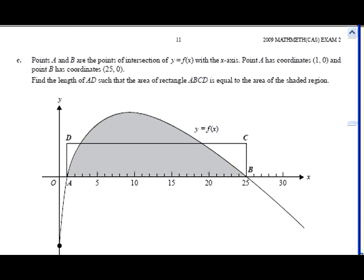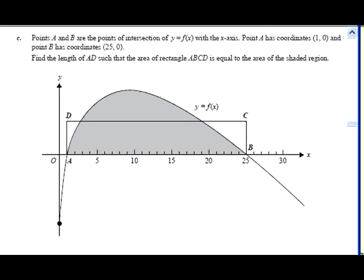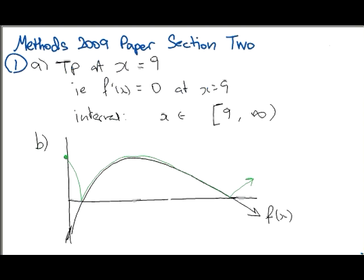On to part c. Part c says, points A and B are the points of intersection of y = f(x) with the x-axis. They'd be very nice to provide point A and point B. You don't even need to find it. Now you want to find the length AD such that the area of ABCD is equal to the area of the shaded region. Another way of asking the question is, what is the average value of f(x) over 1 to 25? Or you could just say, let's just do it geometrically. Find the area, and then equate the areas. And I think that's the approach I'm going to take. So let's get into it.